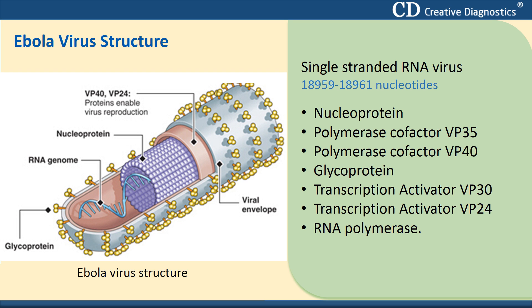The Ebola virus genome consists of seven structural proteins: nuclear protein, polymerase cofactor VP35, VP40, glycoprotein, transcription activator VP30, VP24, and RNA-dependent RNA polymerase. The Ebola virus has a long capsule with the appearance of a crooked, branching filament surrounding a single small strand of RNA.